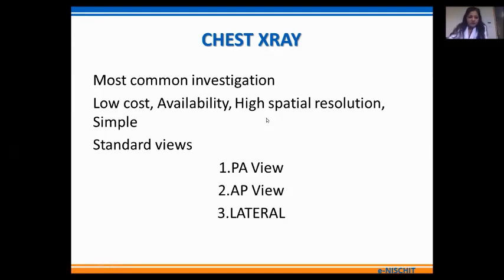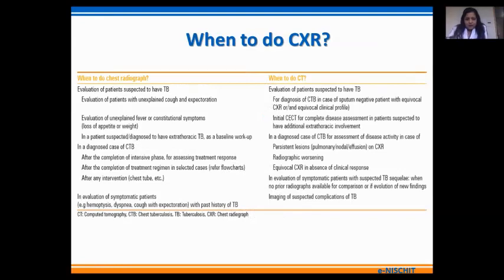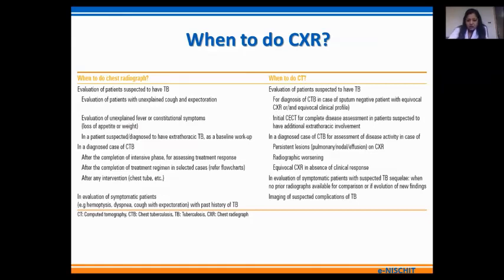The standard views for chest radiography that are employed are the PA view, the AP view and the lateral view. There are other views as well but mainly these three standard views are commonly used. Tuberculosis is a very common global health problem, especially in our country. The current diagnosis of TB requires the demonstration of AFB bacilli in the sputum. Chest X-ray is done as an initial investigation in patients suspected to be having TB, and also for diagnosis and follow-up of sputum positive cases. If chest X-ray findings and lab parameters are discordant, a CT is preferred as it gives a comprehensive view of the lungs, lymph nodes and pleura.